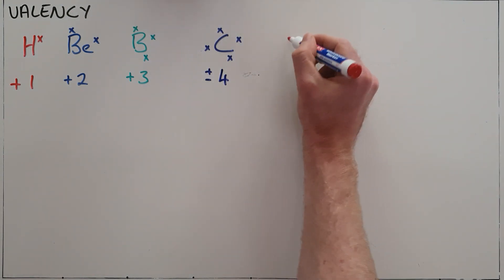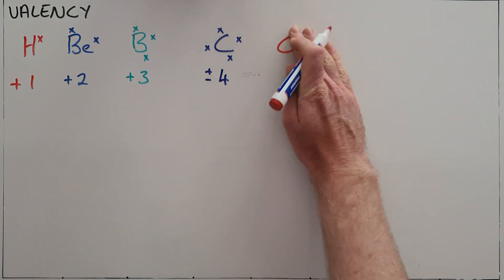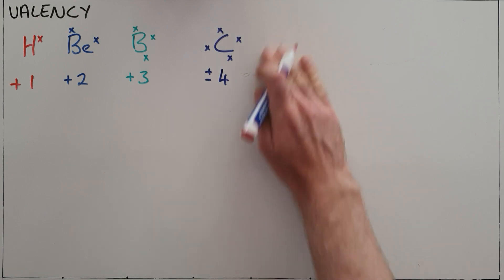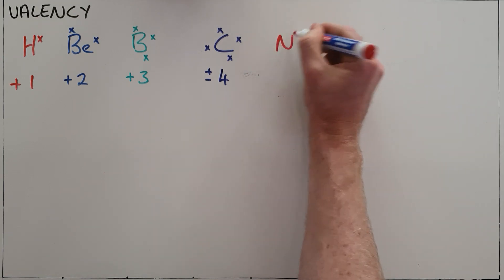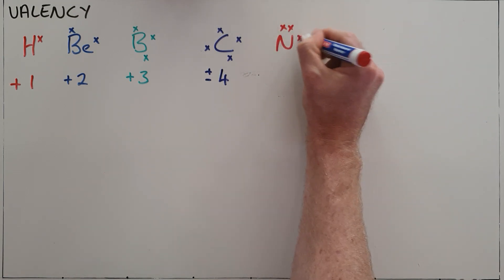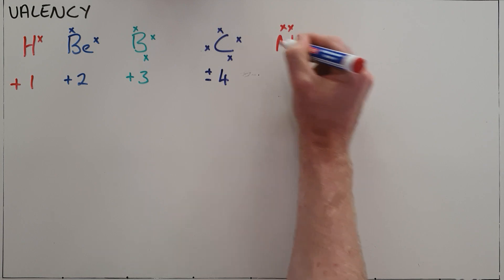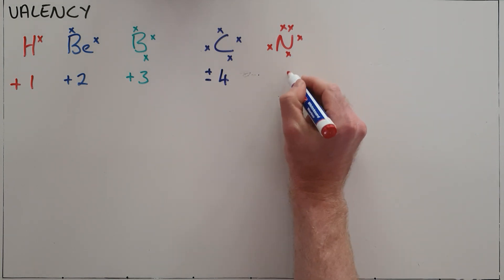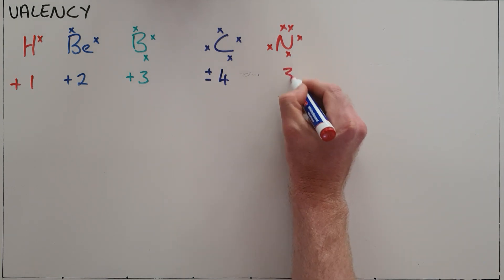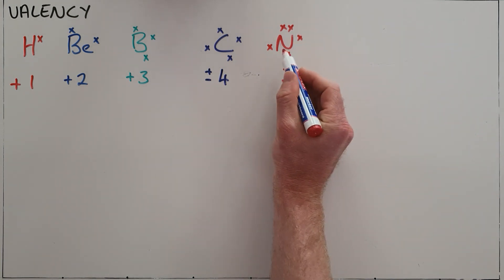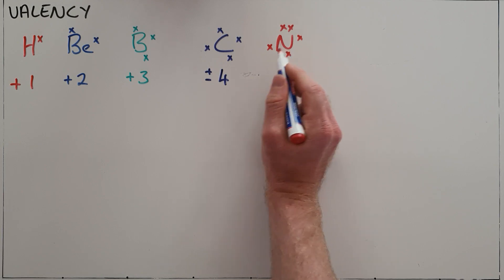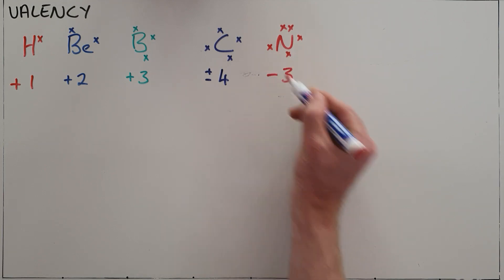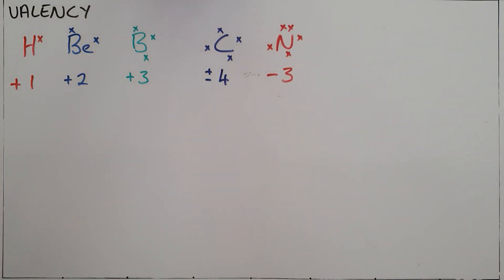Elements in group five of the periodic table — for example, nitrogen — have five valence electrons. For nitrogen, it is far easier to gain three electrons than to lose the five electrons, so we say that it has a valency of three. Specifically, since it has gained three negative charges, we say it has a valency of negative three.